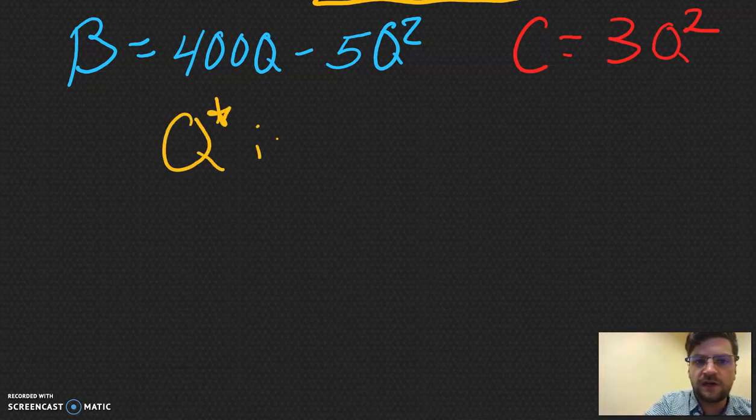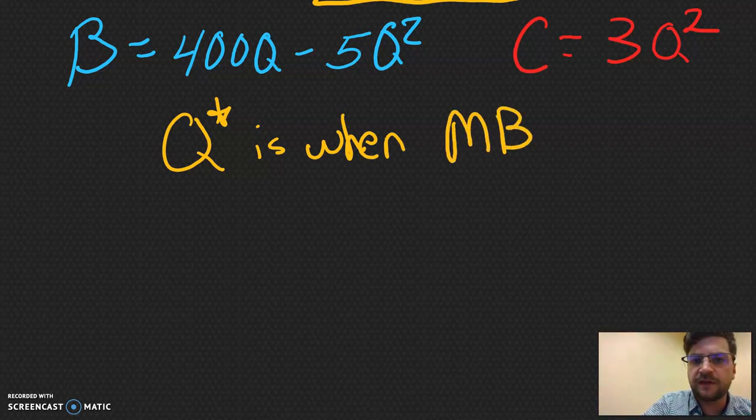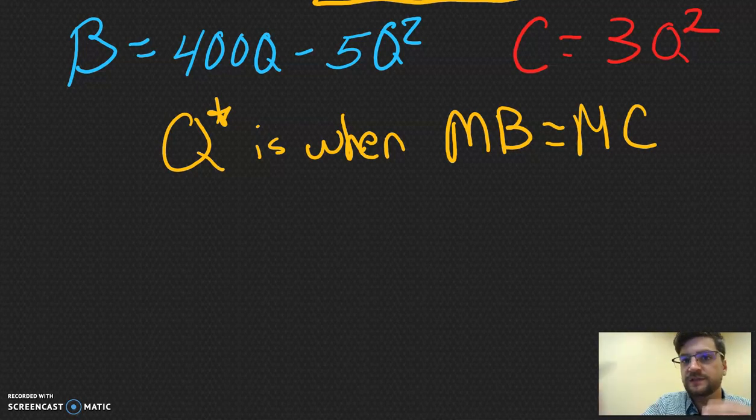There's a shortcut that says that Q star exists when the marginal benefit is equal to the marginal cost. So what does that mean? This marginal benefit, that's nothing more than my B prime, the rate of change of my benefit equation. What's my marginal cost? You guessed it, nothing more than my C prime, my rate of change of that cost equation. And again, there's that shortcut that we can use to calculate this.